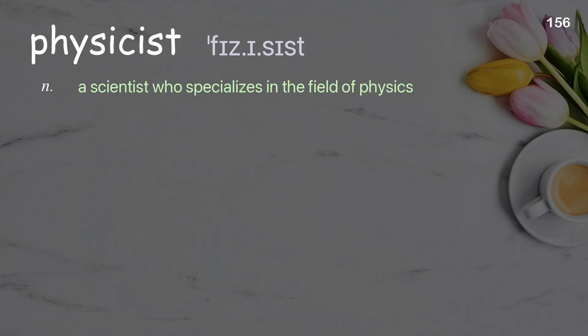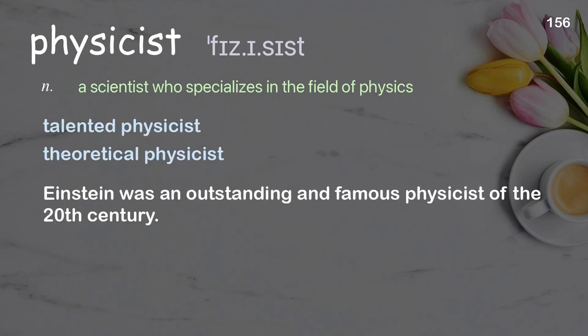Physicist: a scientist who specializes in the field of physics. Examples: talented physicist, theoretical physicist. Einstein was an outstanding and famous physicist of the 20th century.